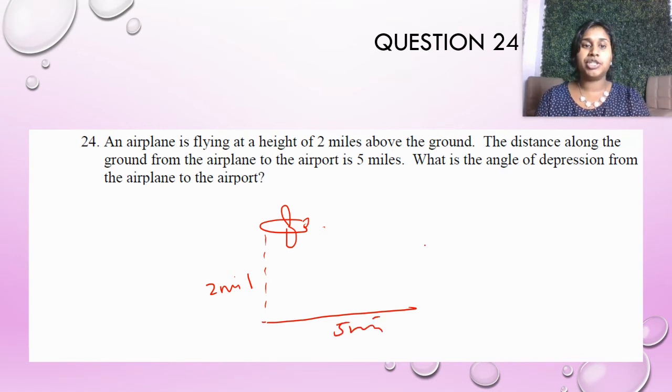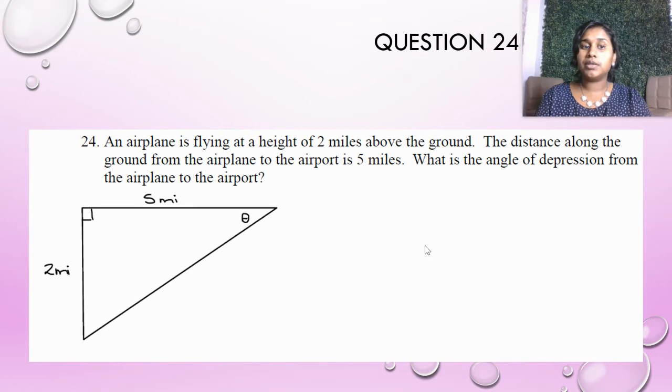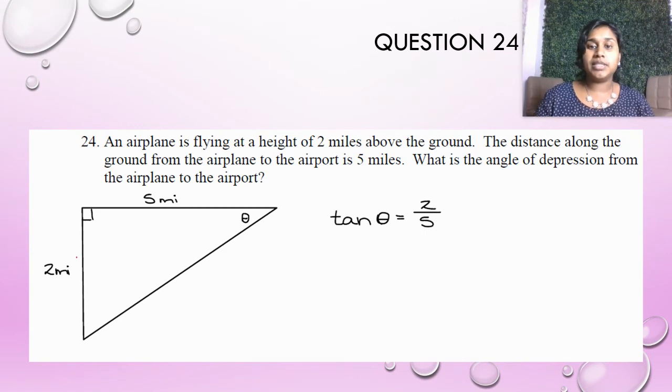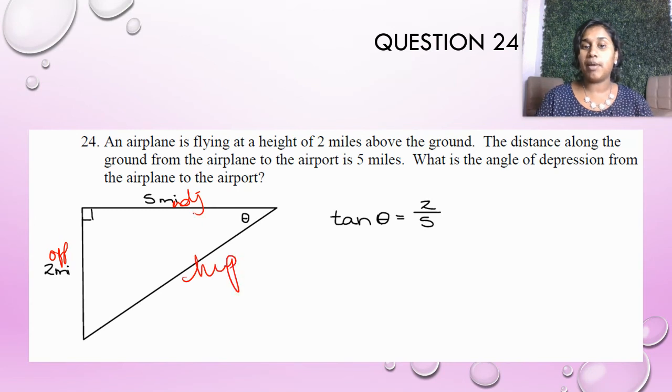What is the angle of depression from the airplane to the airport? So here's that triangle drawn a lot better. I'm two miles up and five miles over. What is the angle of depression from the airplane to the airport? So I know that I'm dealing with tangent because we're dealing with that opposite and adjacent side, right? Because this is always my hypotenuse across from that 90 degree angle.